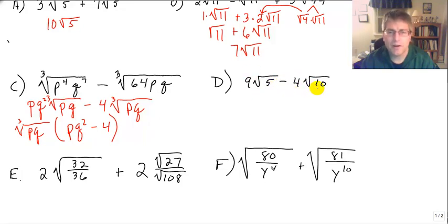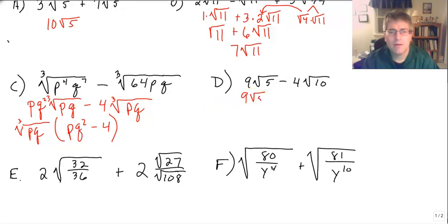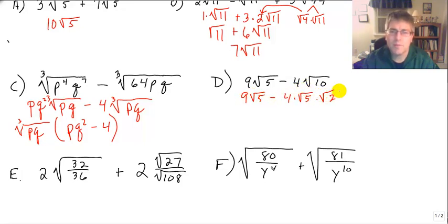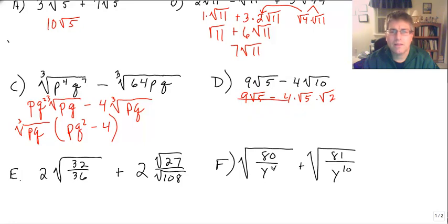Problem D is a little bit different — not quite the same as where our whole radical expression could be factored out. We have 9√5 minus 4 times √5 times √2. Yes, √5 is a common factor, but we still end up with √2 remaining, so we can't get rid of all our radicals. We can't factor out our full common radical, so believe it or not, this one is fully simplified.